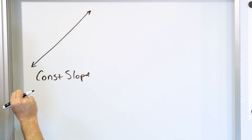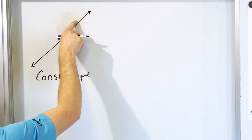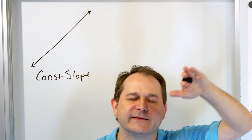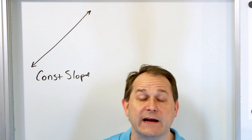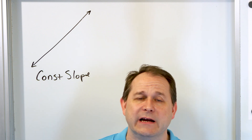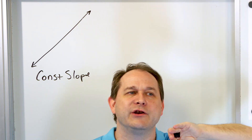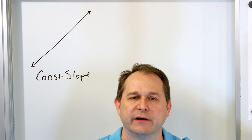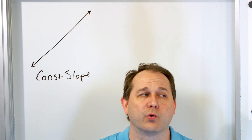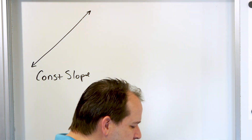Slope is rise over run. As the line goes on, it's the same ratio of rise over run along the entire path of the line. And that's what a line is, actually. It's a set of points so that when you connect the dots, you have the same constant slope between the points. That's really the best definition, or one good definition, of what a line is.